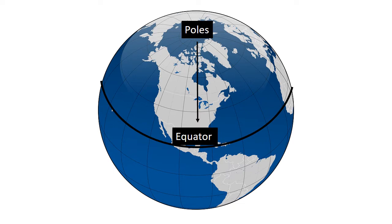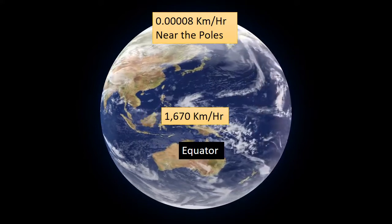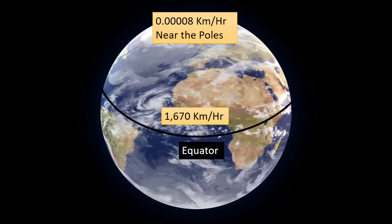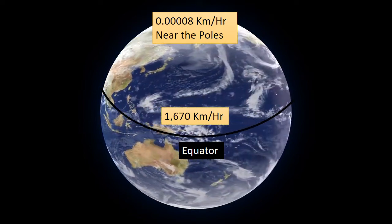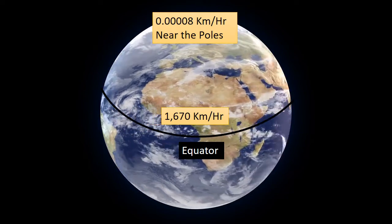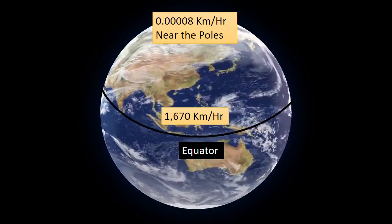At the equator, the spin speed is about 1,670 kilometers per hour, and Earth's rotational speed near the poles is near about 0.0008 kilometers per hour.